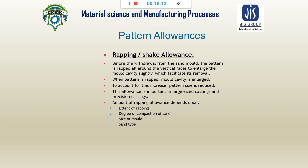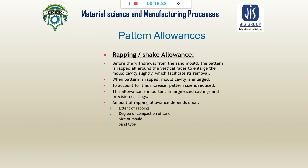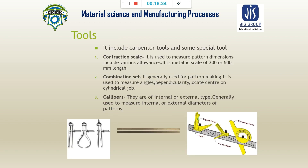Rapping allowance is a negative allowance — the size of the pattern is somewhat smaller than the desired shape. The amount of wrap allowance depends on the extent of wrapping, degree of complexity, size of the mold, and sand type. Now we will look at the tools used in pattern making.